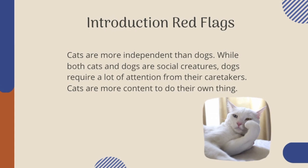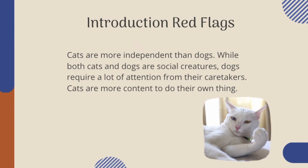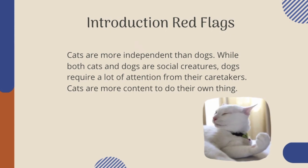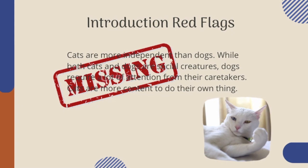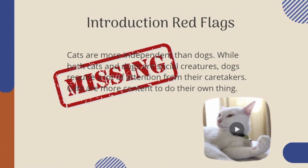Here's another example of the same paper. If I said, 'Cats are more independent than dogs. While both cats and dogs are social creatures, dogs require a lot of attention from their caretakers. Cats are more content to do their own thing.' In this case, what's wrong with my introduction? Well, I don't really have an introduction — I just jumped right into my first point instead of really explaining what I was hoping to prove. The introduction is missing, and I definitely want to give one that lays out my full argument before I dive into one of my main points.